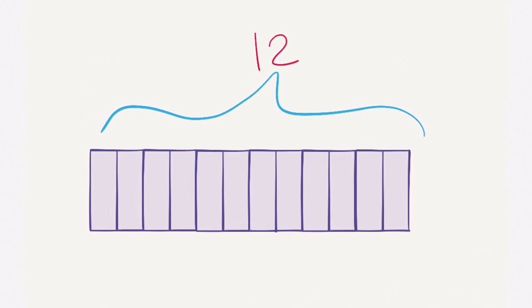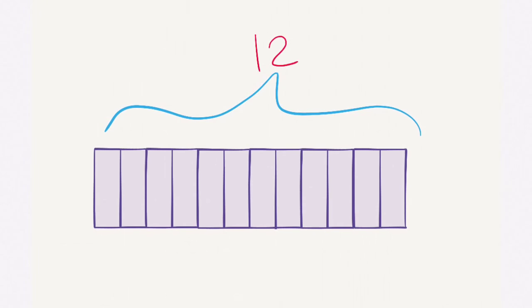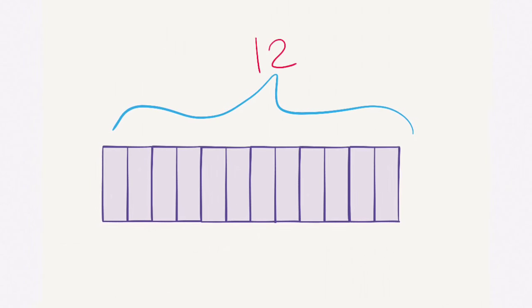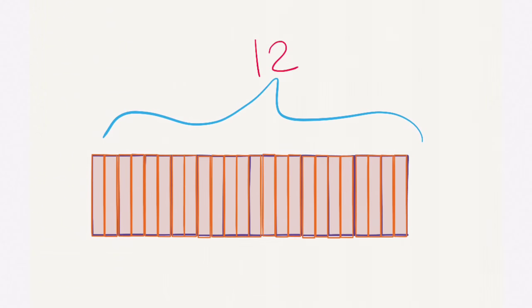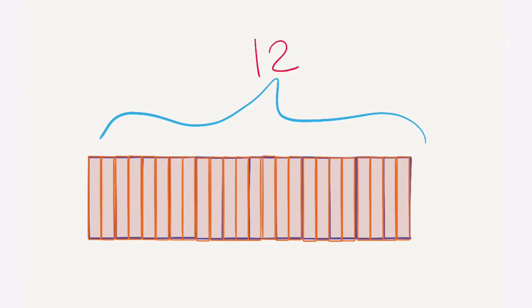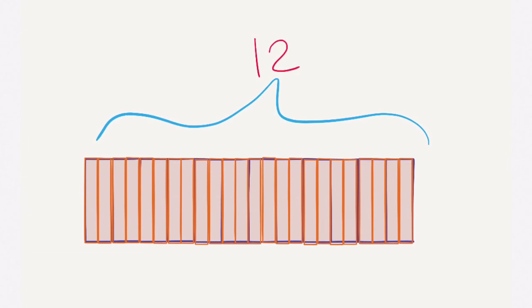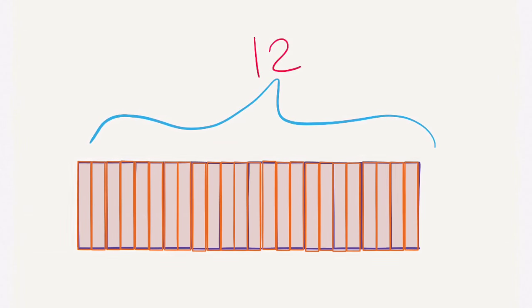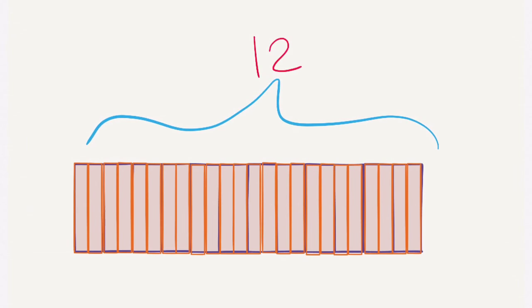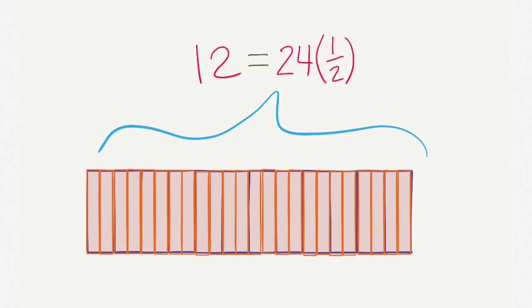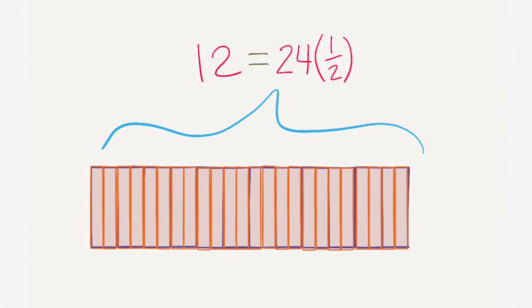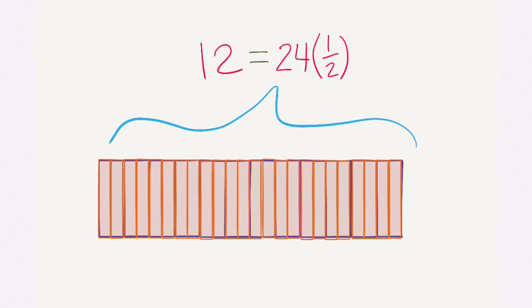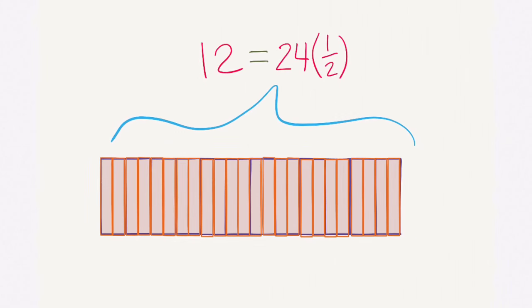Here is my tape diagram — here are 12 things. I need to divide them into halves, so I take each of the 12 and cut them in half. I'm looking for how many halves there are in 12. Counting them, I find that in 12 there are 24 halves. So the answer to how many halves are in 12 is 24.